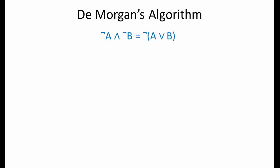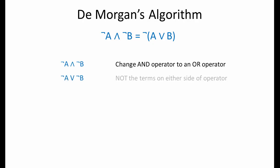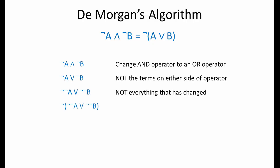We can perform the same transformation in reverse, by following exactly the same steps. Let's change the AND operator to an OR operator. NOT the terms on either side of the operator. NOT everything that's changed. And then remove any double negation.